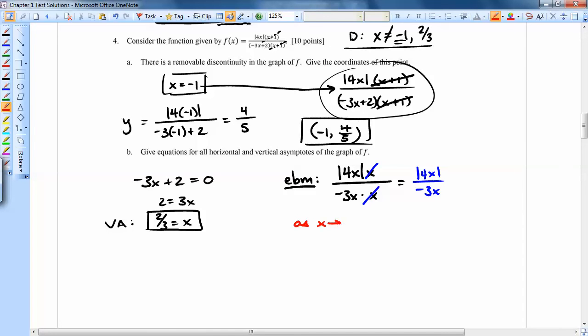As x gets really big, think about what happens to this end behavior model. I'm going to plug in a really big number here and the same really big number there, and they're both positive. So on top, I'm going to get 4 times a positive number, which is still positive, and I can take it out of the absolute values. Those don't matter then. Over negative 3 times the same big positive number. So that's going to turn into 4 over negative 3.